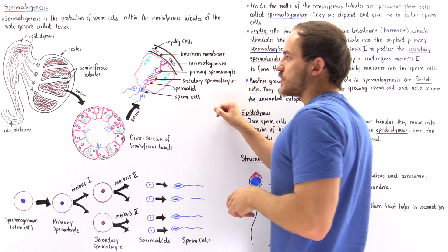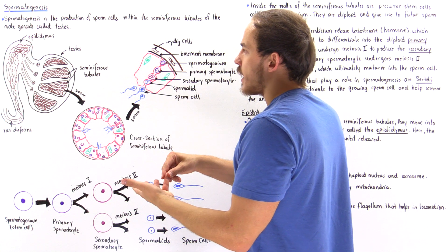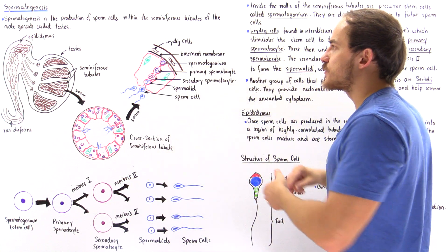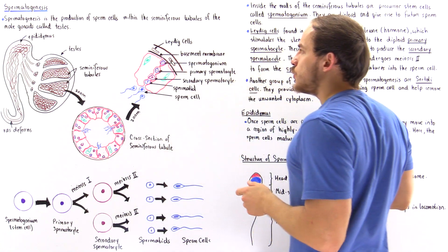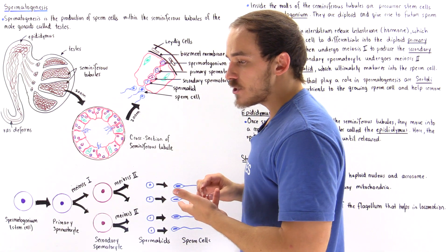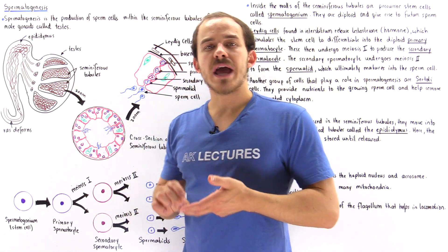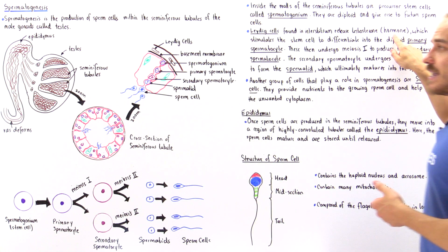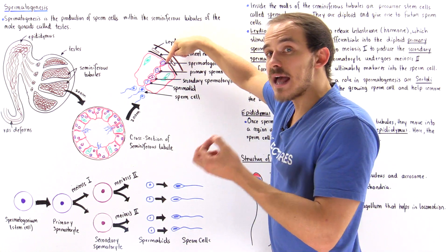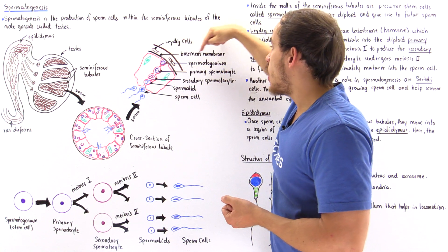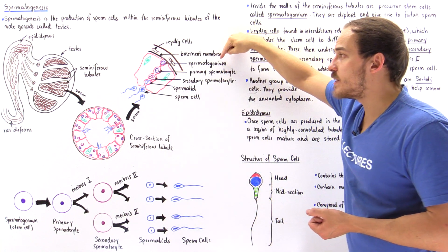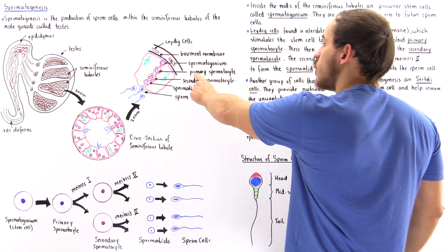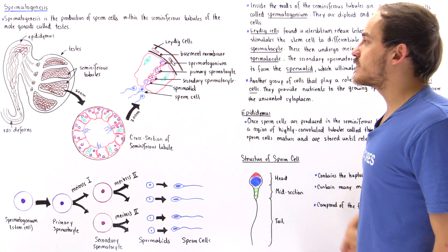Inside the interstitial space, we have blood capillaries and cells known as Leydig cells. Leydig cells produce and release a special hormone known as testosterone. Testosterone stimulates the stem cell — the precursor known as spermatogonium — to differentiate into a diploid cell known as the primary spermatocyte.